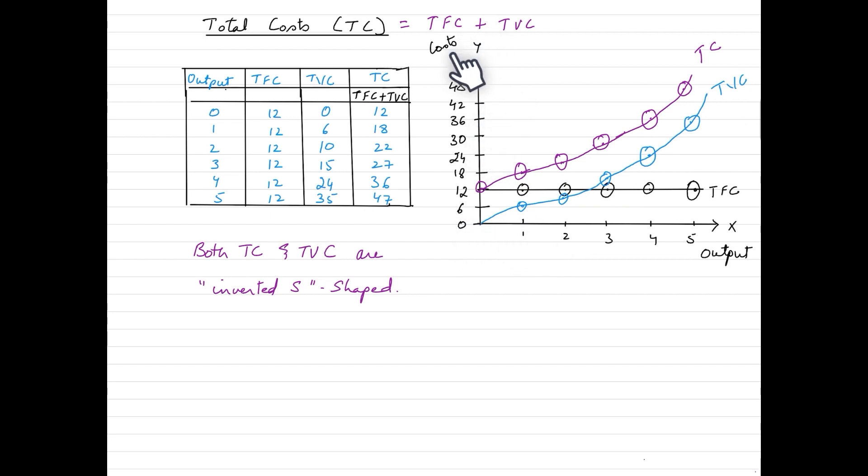In this particular diagram, on y-axis, we have all the three costs. That is total fixed cost, total variable cost and total cost plotted on here. The x-axis, on the other hand, would talk about the output being produced by the firm.